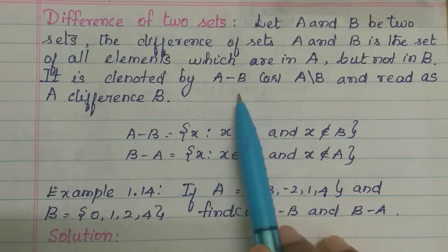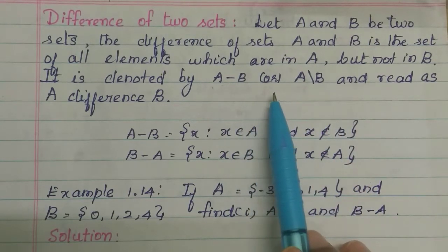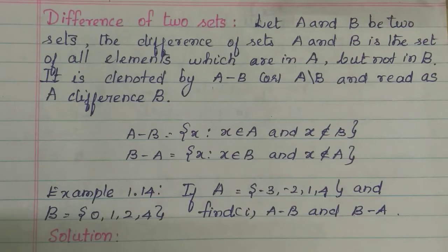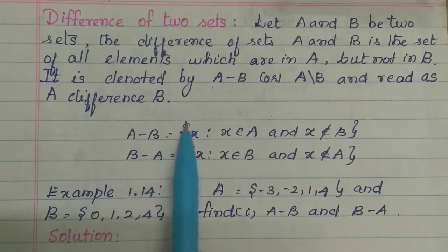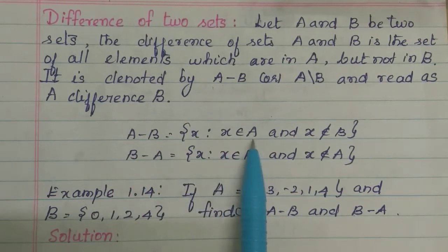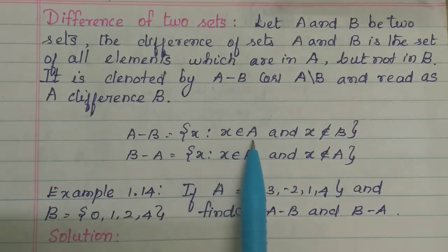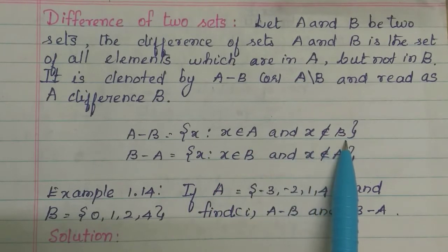B minus A means B is present and the element is removed from A. So we can write A minus B is equal to the set X, such that X belongs to A and does not belong to B.